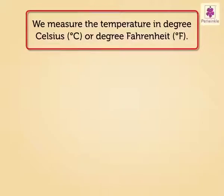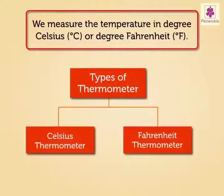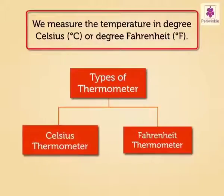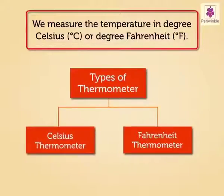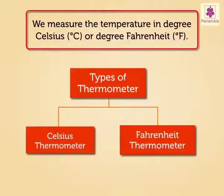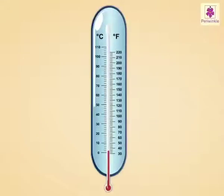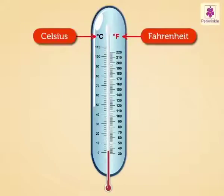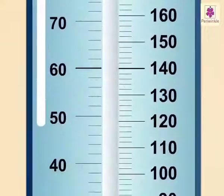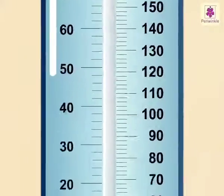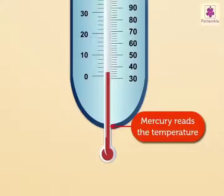There are mainly two types of thermometers with respect to units. They are the Celsius thermometer and the Fahrenheit thermometer. Look at this thermometer — it has both Celsius and Fahrenheit scales. Each black line indicates 2 degrees. Mercury is used in this thermometer to read the temperature.